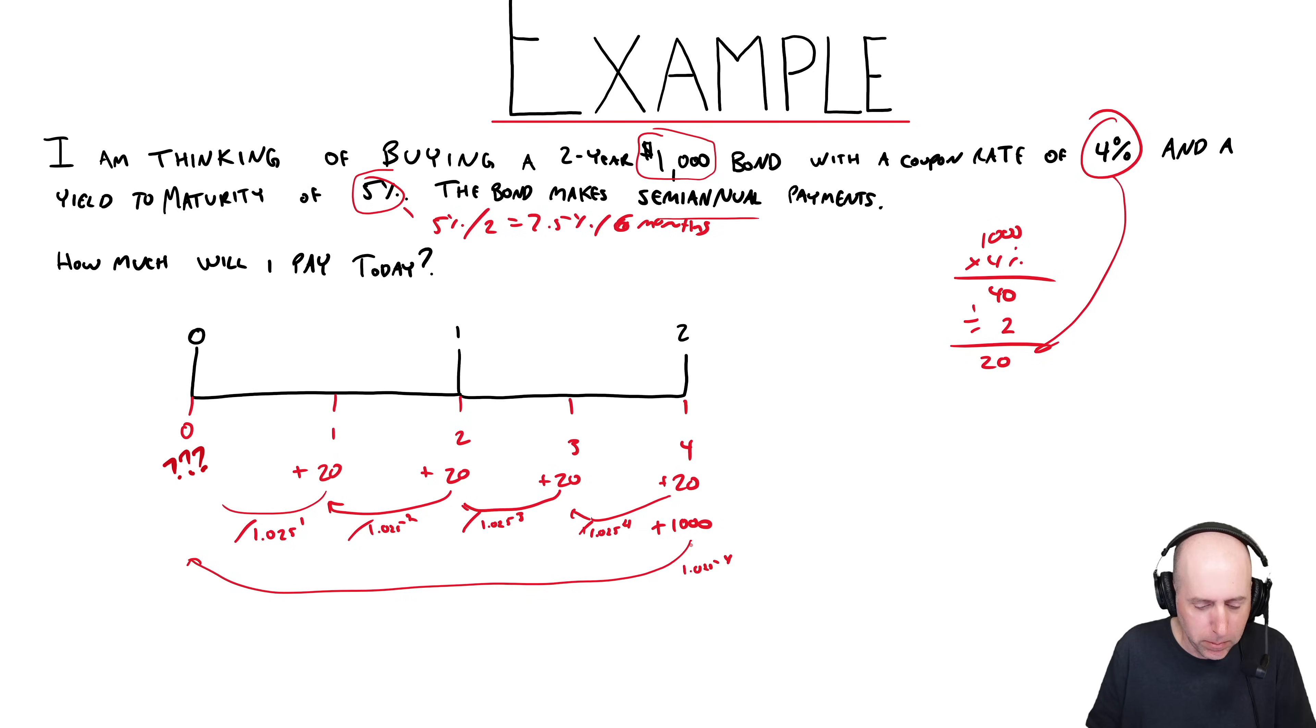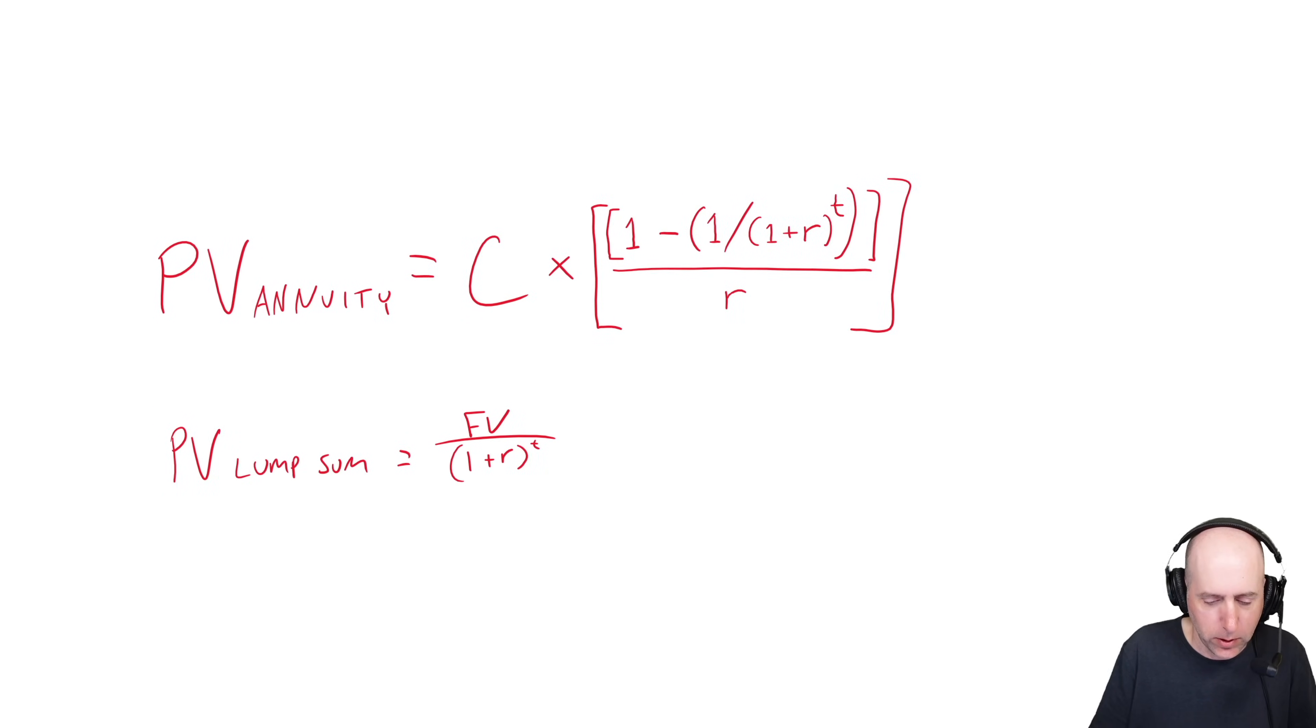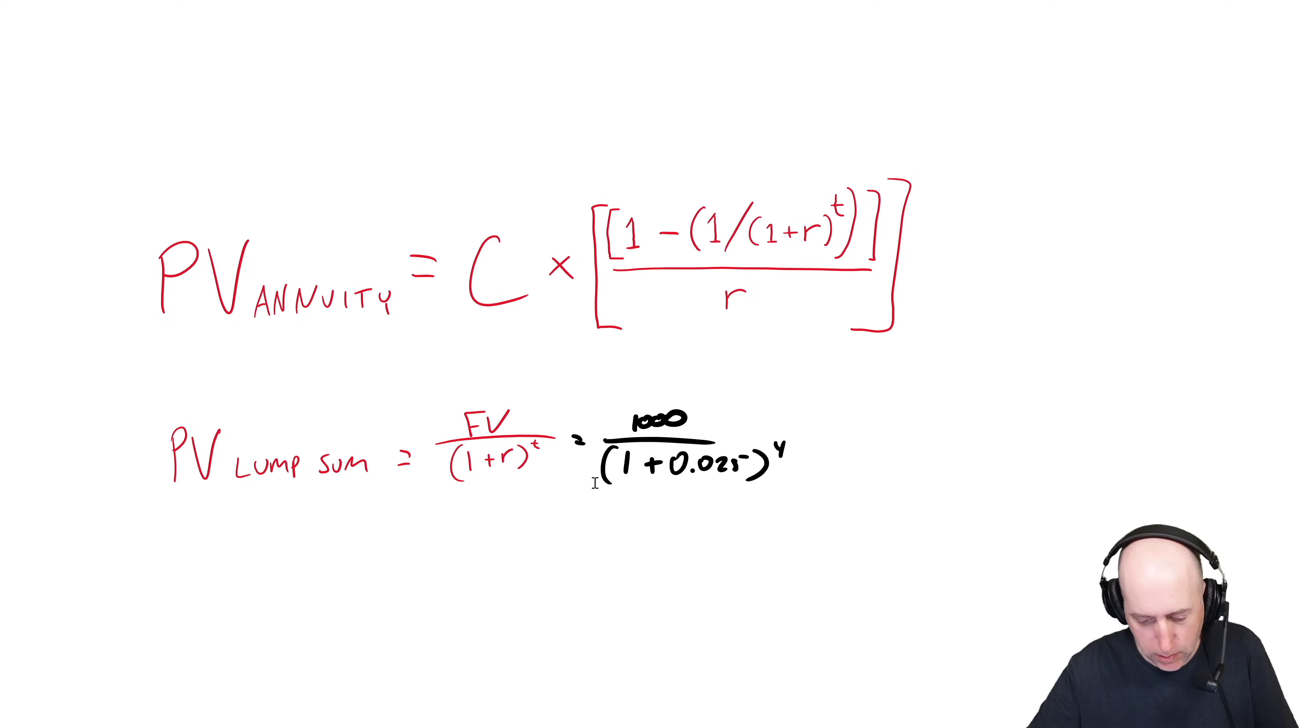So the way to do it is either with a financial calculator or by formulas. Let's do it first by formulas. Here's the formula for present value of an annuity, that's the $20 every six month piece, and present value of a lump sum, that's the thousand dollars at the end. Let's do the lump sum first. We said it's a thousand dollar lump sum divided by one plus R.